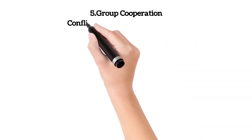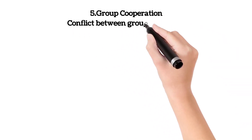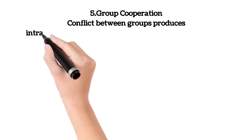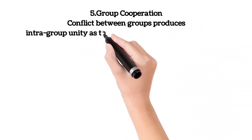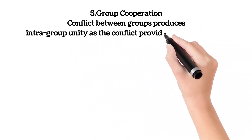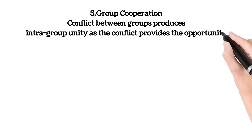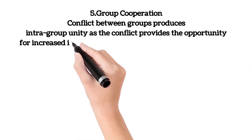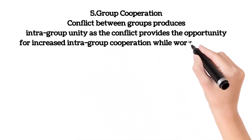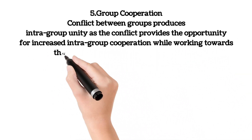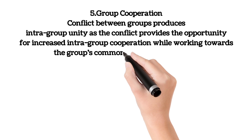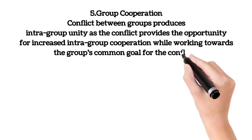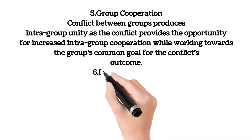5. Group Cooperation: Conflict between groups produces intragroup unity, as the conflict provides the opportunity for increased intragroup cooperation while working towards the group's common goal for the conflict's outcome.